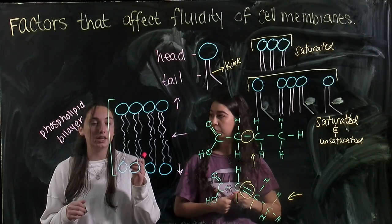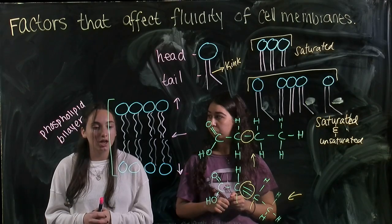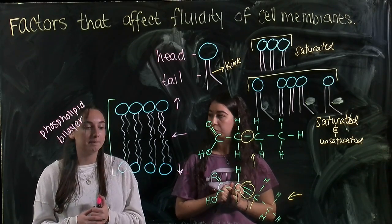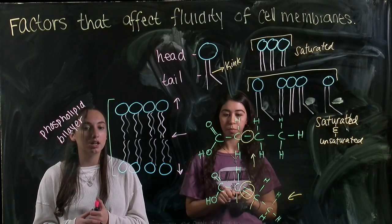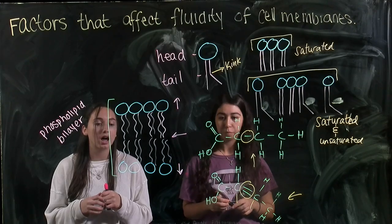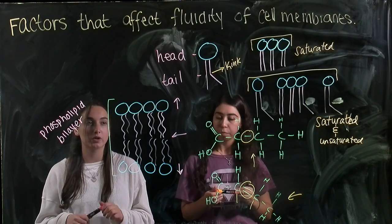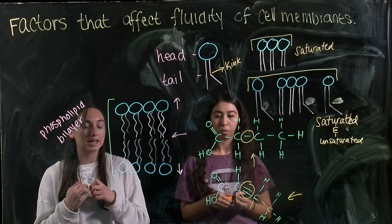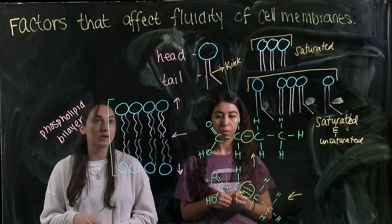Overall, the shorter the chain means the less London dispersion forces seen, and that means the bilayer would be more fluid. While the more London dispersion forces, which means the longer the tail, that means they want to stick together more, making the bilayer less fluid.